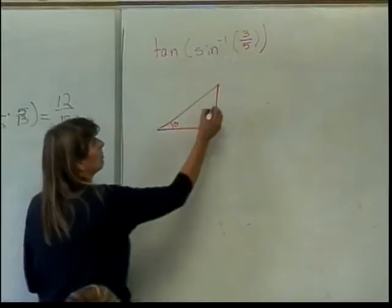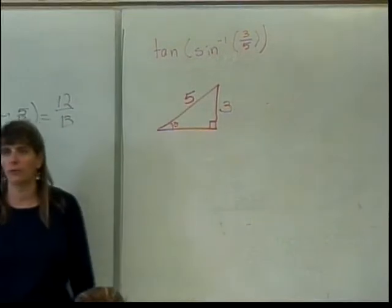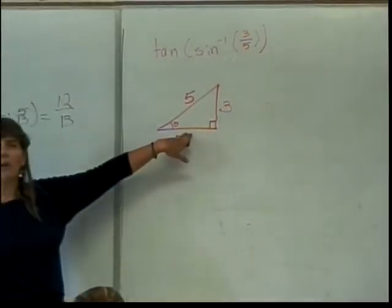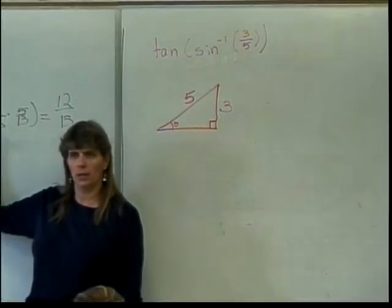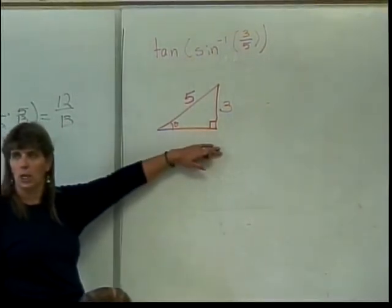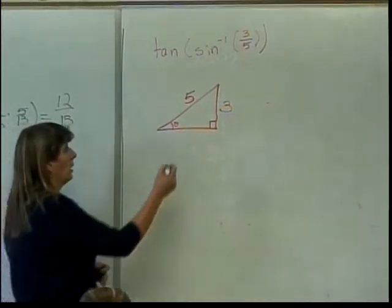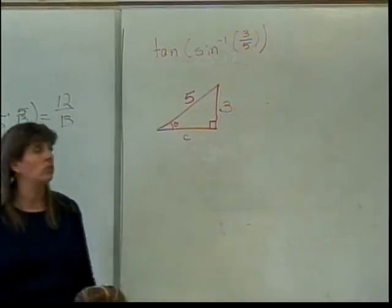They're opposite over hypotenuse. So there's my 3 and my 5. Now I need to find this side. I would like to point out that I've already used x in calculations in this problem, so I should not call this side x. What should I call it? A? Okay. Anything else? Just not x. Oh, and not theta.